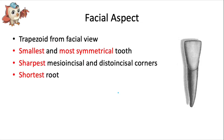Just like the other incisors, the crown has a trapezoid shape from the facial view, tapering down to its neck. It's the most narrow of all the teeth and the overall smallest tooth in the entire mouth. It's also the most symmetrical tooth from mesial to distal, and it's actually hard to distinguish which is which. The only thing we can notice is that the distal surface is slightly more convex when viewed from the facial surface.